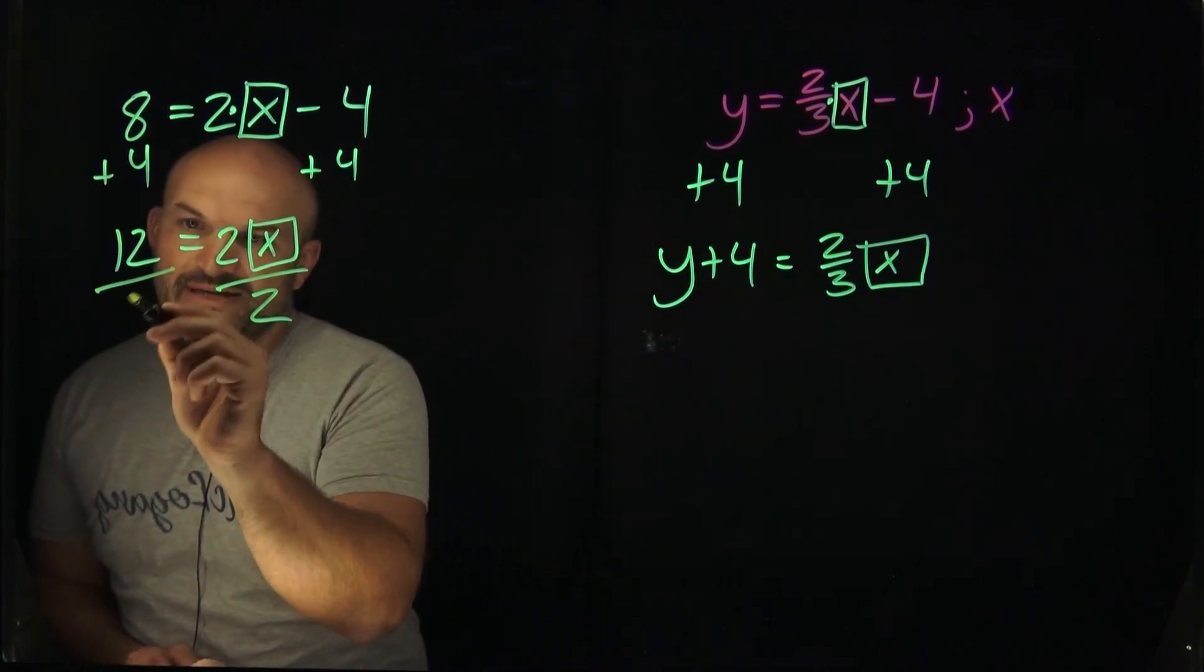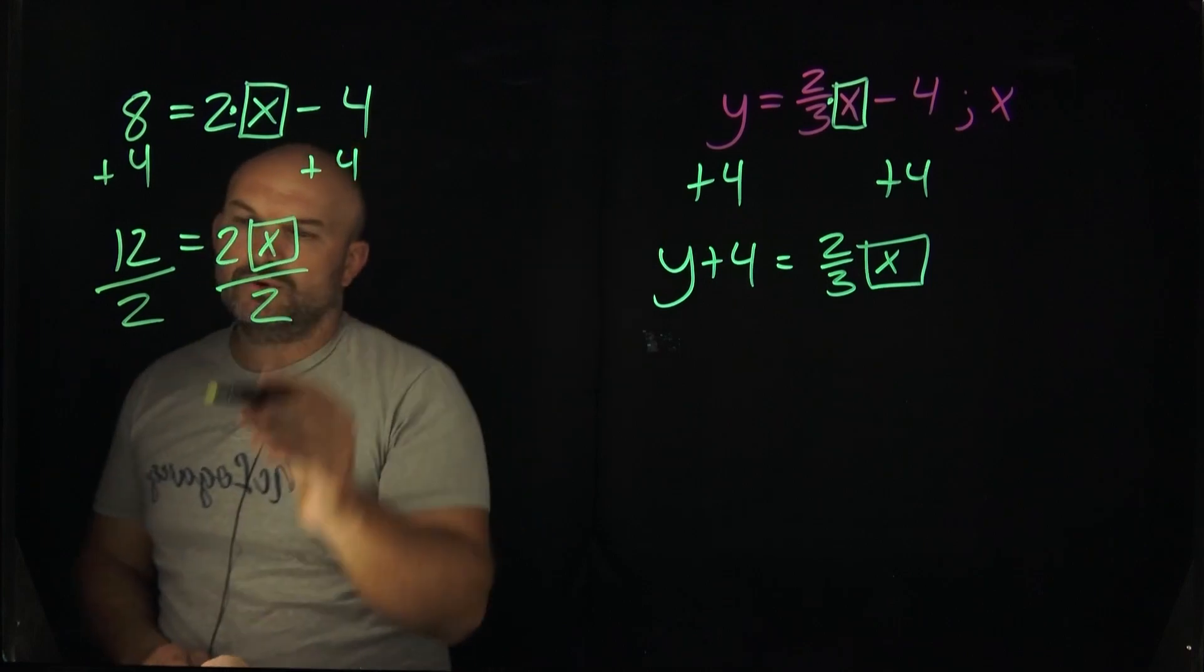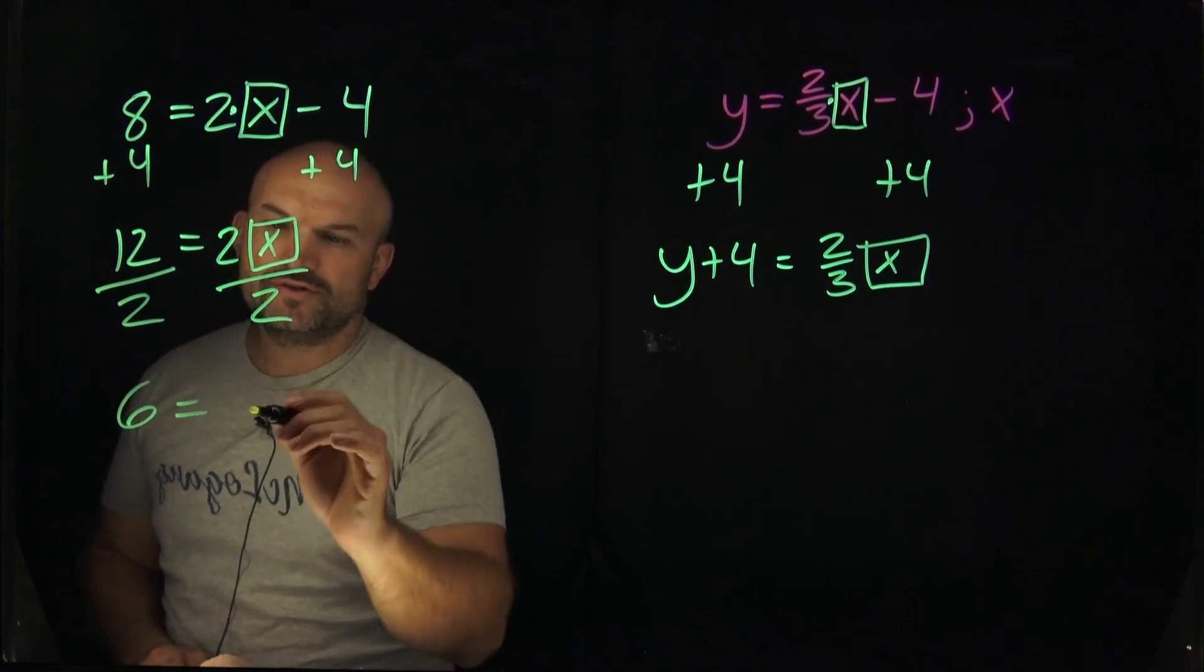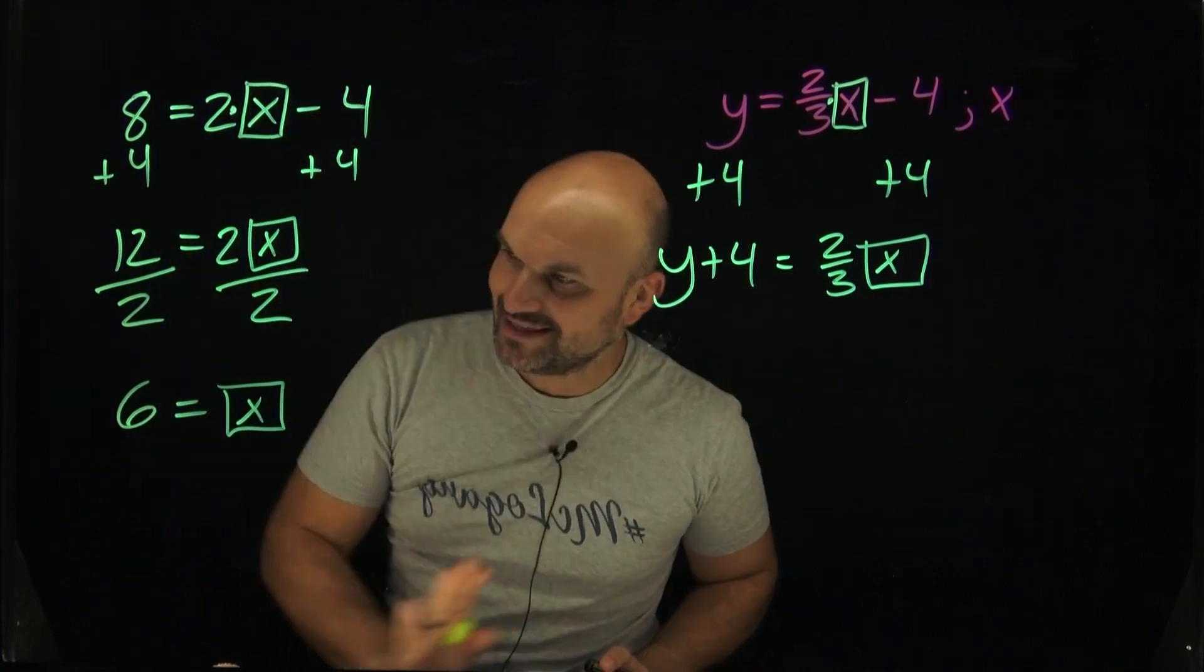You can see 2 divided by 2 gives you a 1 for my coefficient. Just make sure you use the properties of equality—whatever you do on one side you have to do on the other side. 12 divided by 2 is going to be a 6. Over here I'm going to have a 1, but I don't really need to write that. And guess what? My x has been pinned. Notice how I didn't do anything with the x.